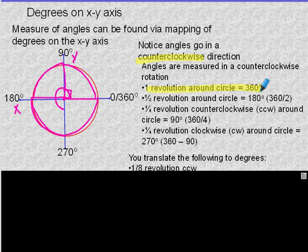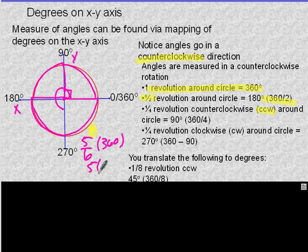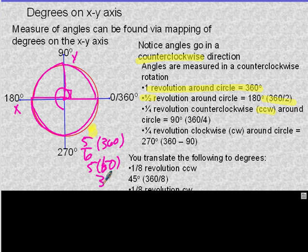A half revolution is 180 degrees. A fourth of a revolution is a fourth of 360, all counter-clockwise. For example, if I had 5/6 of a rotation, I would multiply 360 degrees by 5/6, which gives 300 degrees. So you just multiply 360 degrees by the fraction of your rotation to get your degrees. That is how you figure out degrees based on revolutions.